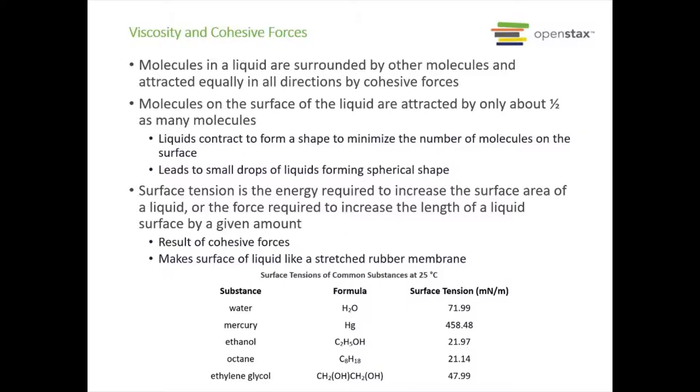But if it's on the surface of the liquid, it's only getting attracted by about half as many molecules because not all of it is inside. So what happens is the liquids are going to contract to make a shape that minimizes the number of molecules on the surface. This is why drops of liquids tend to form spherical shapes.